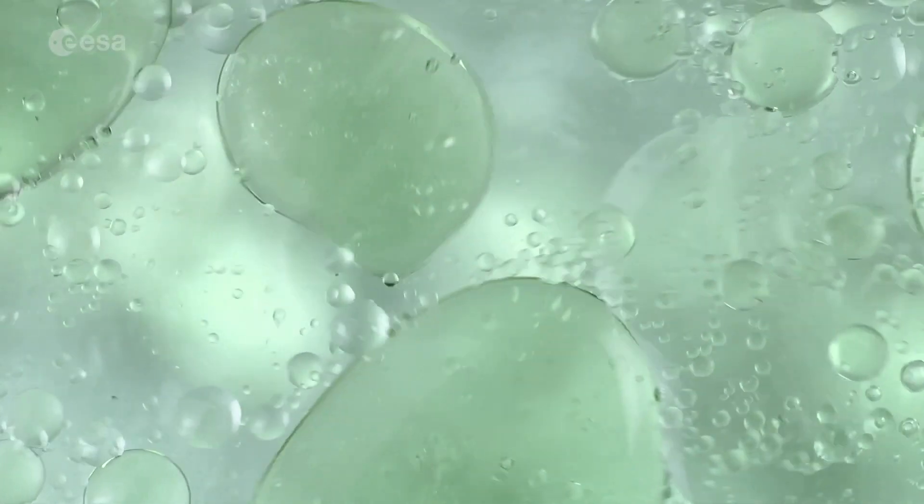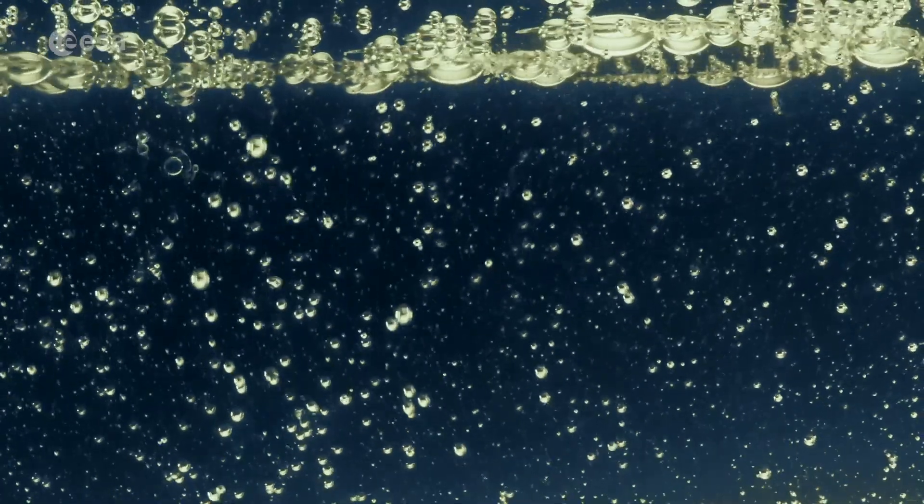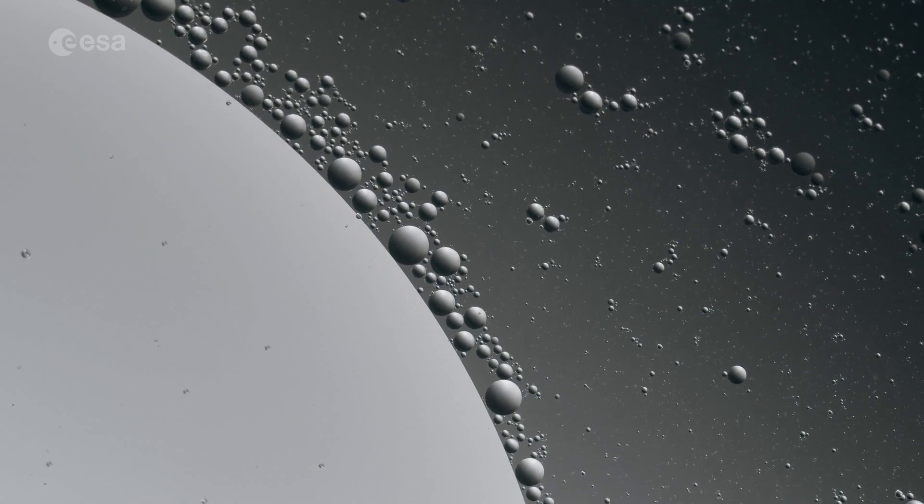For example by mixing oil and water an emulsion is obtained. Slowly gravity will separate the two liquids moving the less dense oil to the top and the water to the bottom of the container.